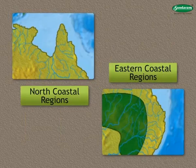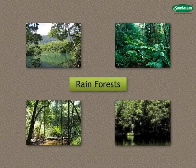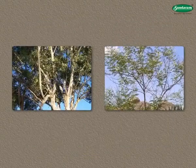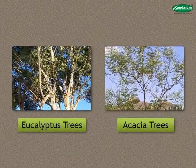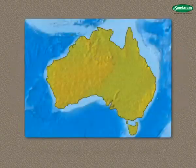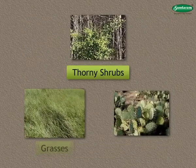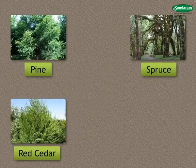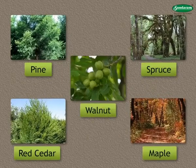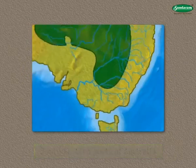Forest Resources: The north and eastern coastal regions get heavy rains and therefore we find rainforests in these areas. We can find a number of species of eucalyptus and acacia trees in Australia. Due to low rainfall in the central region, we find thorny shrubs, grasses and cactus. Coniferous trees like pine, spruce, red cedar, maple and walnut are found in the southeastern parts of Australia and Tasmania.